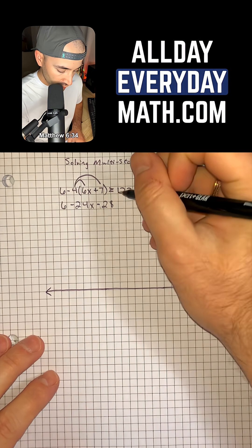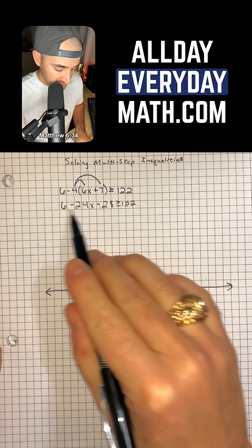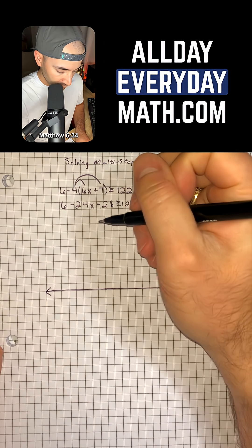So now we'll bring down the rest of our equation. And so now we have like terms that we can combine on the left side. So 6 and negative 28 will combine to make negative 22.